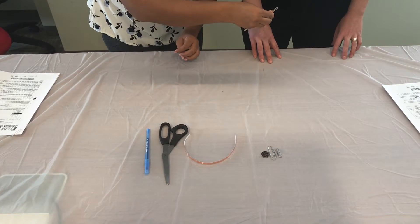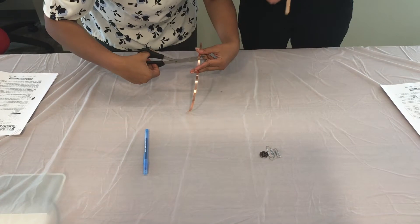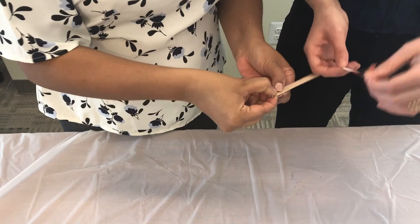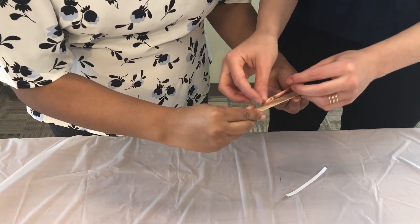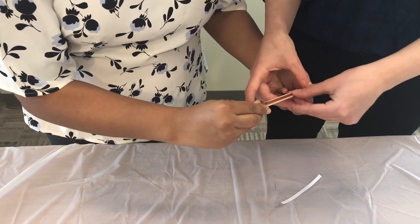The student can then cut the tape slightly shorter than the full length of the popsicle stick. Put the strip of tape all the way from the curved end of the popsicle tip, covering the LED legs down toward the other end of the stick.